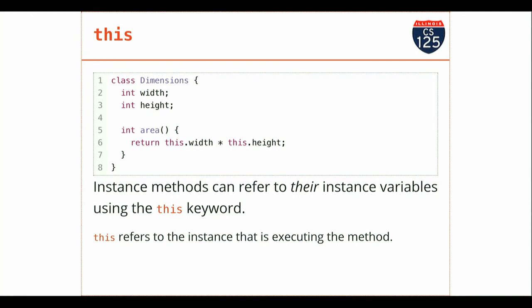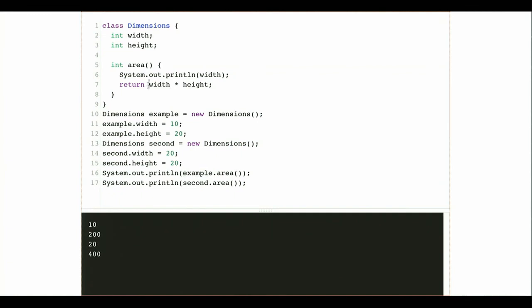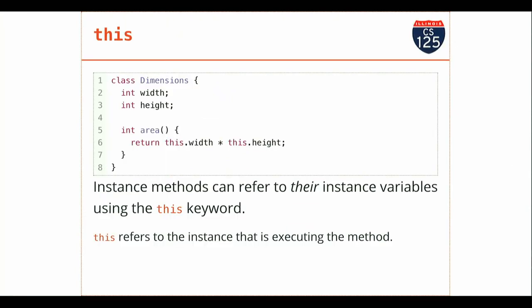Someone asked about `this` — this is a keyword that refers to the instance of the class that's currently executing the method. As I showed you, you don't have to use `this` — you can write just `width` and it works the same way. `width` is not passed to `area` as a parameter, and it's not defined inside `area` — it's an instance variable on that instance of the class. If you want to be more explicit you can use `this.width`, but it's optional.